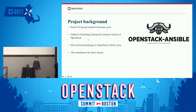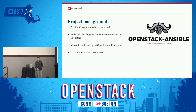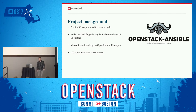A quick background: it started off as a proof of concept in the Havana cycle, then moved to StackForge in the Icehouse cycle. It moved from StackForge to the OpenStack namespace in the Kilo cycle. StackForge was where you put OpenStack-related projects that aren't specifically Nova, Keystone, or core OpenStack projects — deployment projects, analytics, and so on. A lot of that moved into the OpenStack namespace when they moved to the big tent model.